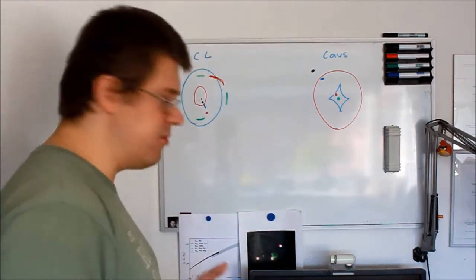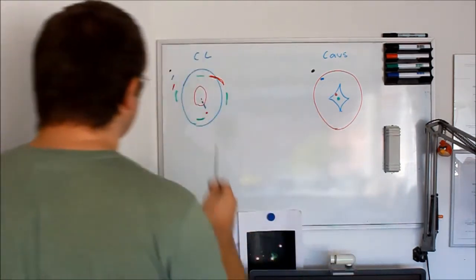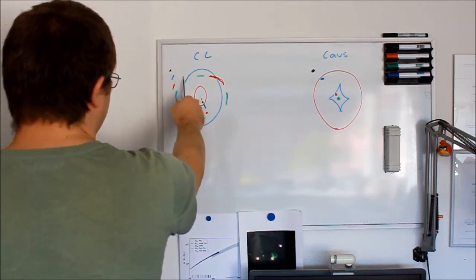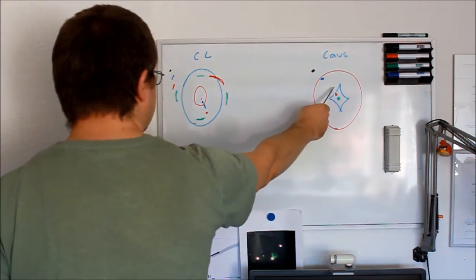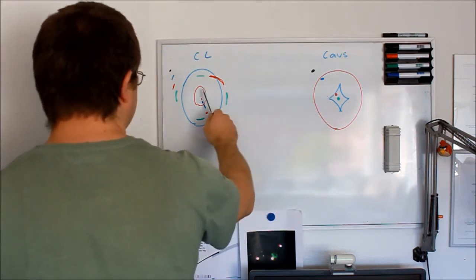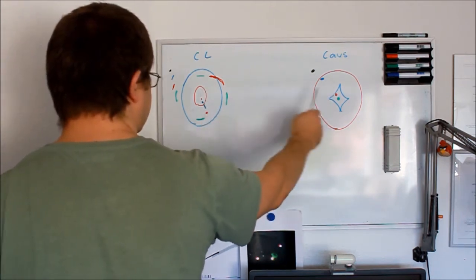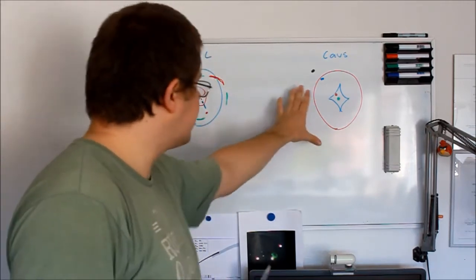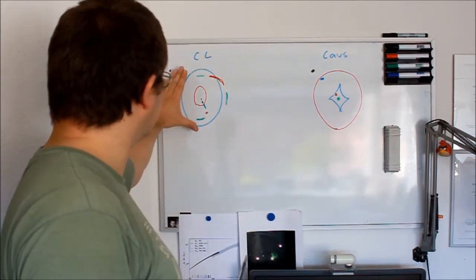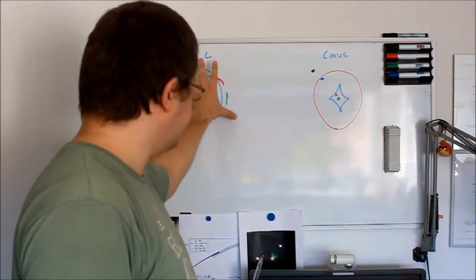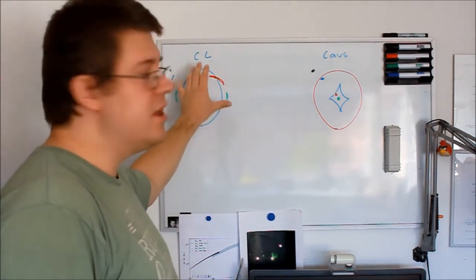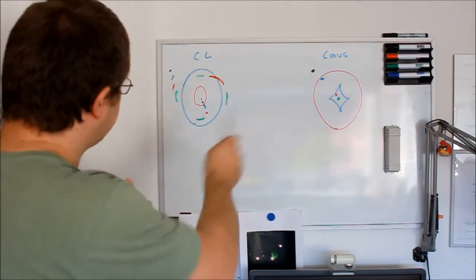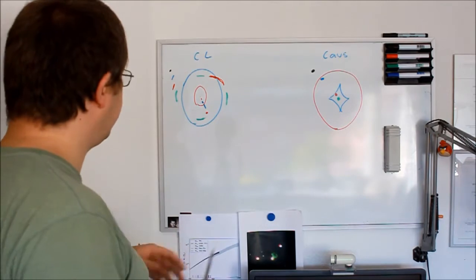The outer critical line is related to the inner caustic, and the inner critical line is related to the outer caustic, because the caustics are the projection of the critical lines from the lens plane, or image plane, down to the source plane. Let's try to lay out how we can derive image positions.